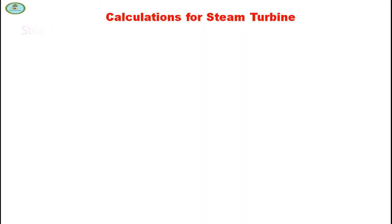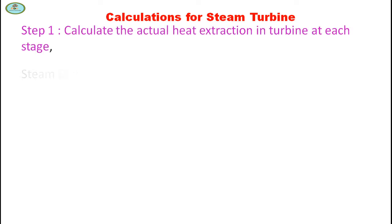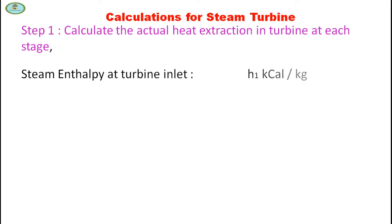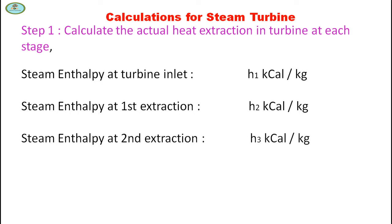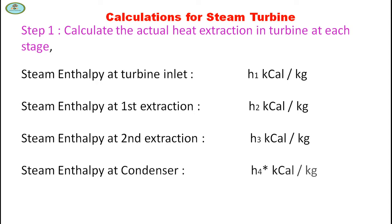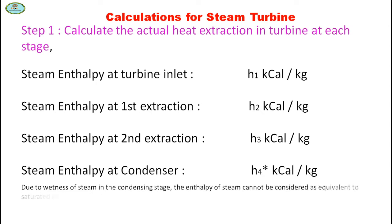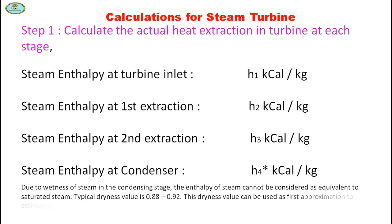Step 1: Calculate the actual heat extraction in the turbine at each stage. Steam enthalpy at turbine inlet is H1 kcal/kg, at first extraction is H2 kcal/kg, at second extraction is H3 kcal/kg, and at the condenser is H4 kcal/kg. Due to wetness of steam in the condensing stage, the enthalpy cannot be considered equivalent to saturated steam. Typical dryness value is 0.8 to 0.92.